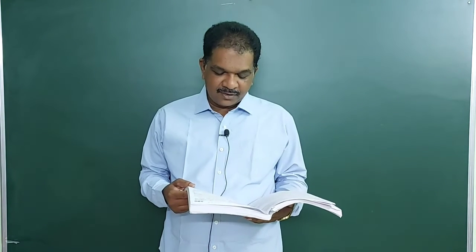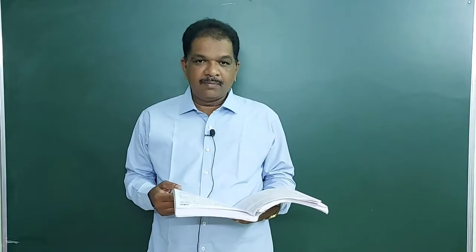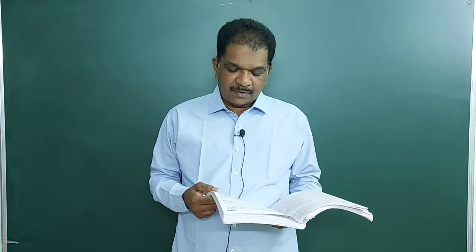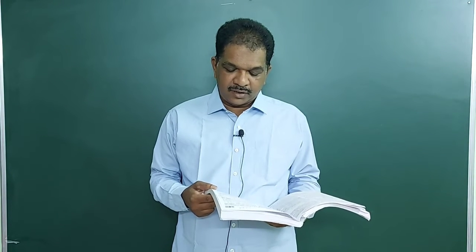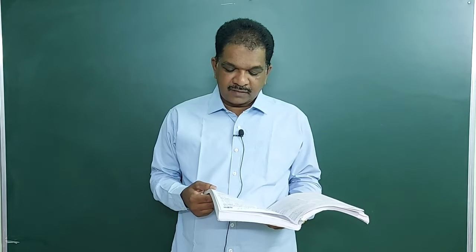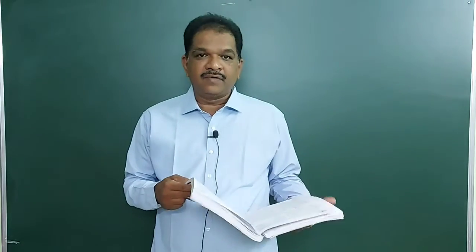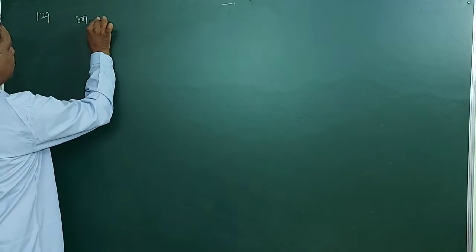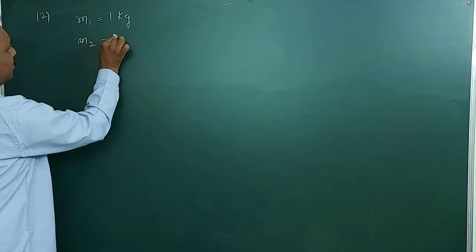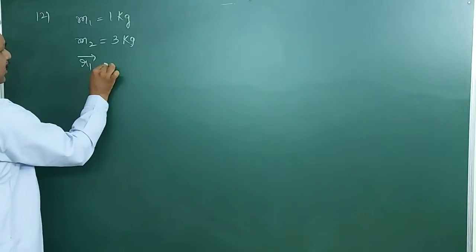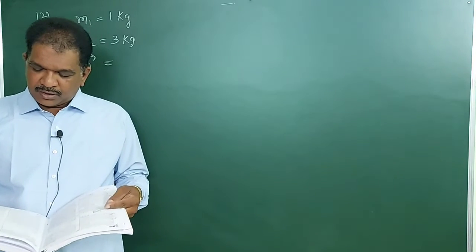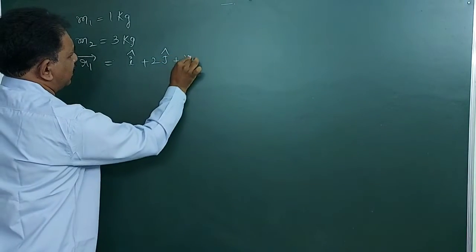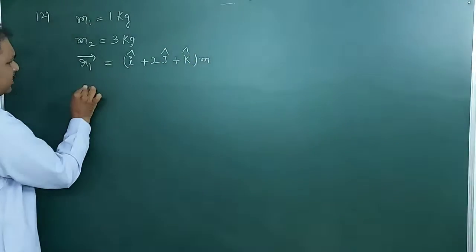Good morning students. Last class we finished up to problem number 11. Problem number 12: two bodies of masses 1 kg and 3 kg having position vectors i-cap plus 2j-cap plus k-cap and minus 3i-cap minus 2j-cap plus k-cap respectively. So m1 is equal to 1 kg, m2 is equal to 3 kg. Position vector of the first body is i-cap plus 2j-cap plus k-cap.